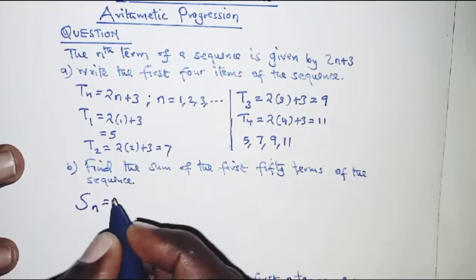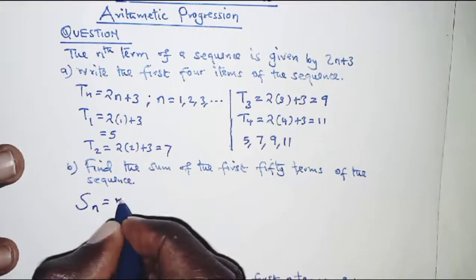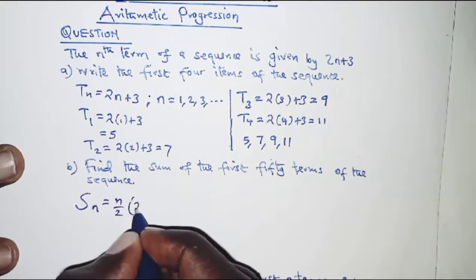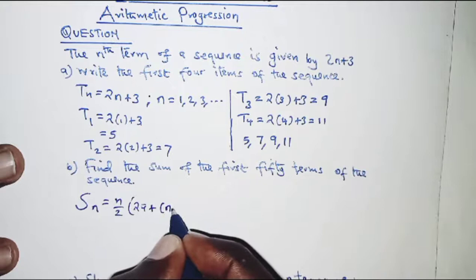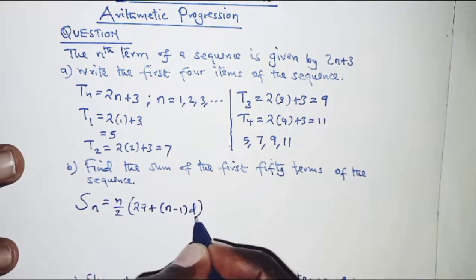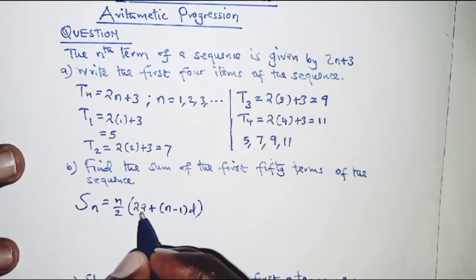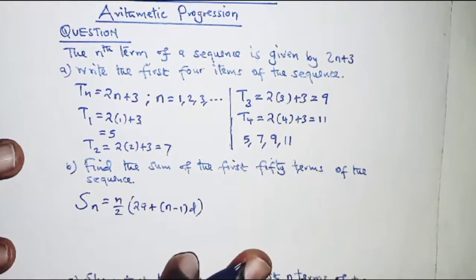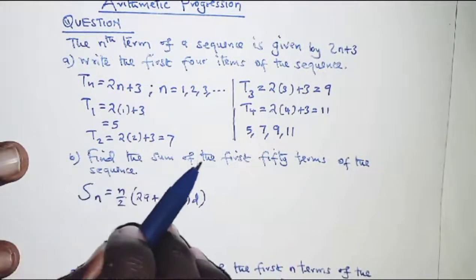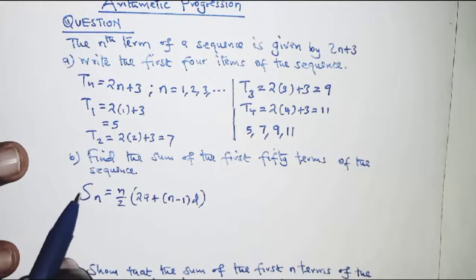The sum of the first n terms of an arithmetic sequence is given by S_n equals n over 2 times the quantity 2a plus (n minus 1)d, where a is the first term, d is the common difference, and n is the number of terms.